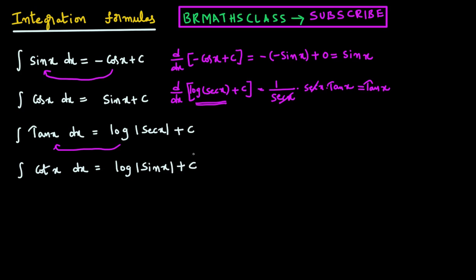Because if we differentiate the right-hand side — imagine sin x as x — derivative of log sin x is 1 by sin x, into derivative of sin x which is cos x. So cos x by sin x is cot x — that's what we are getting. If you differentiate the right-hand side part, you get cot x. Because of this, we say integral of cot x dx is log mod sin x plus c.